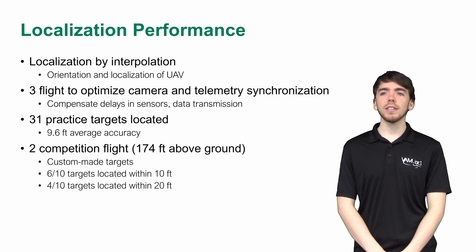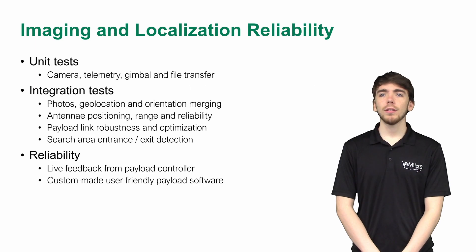Three flights were conducted to optimize the synchronization between the camera and the telemetry. During test flights, 32 practice targets were located with an average accuracy of 9.6 feet. Two competition flights were conducted where 6 out of 10 targets were located within 10 feet and the remaining 4 were located within 20 feet. To ensure reliability of the imaging system, each component was tested individually.